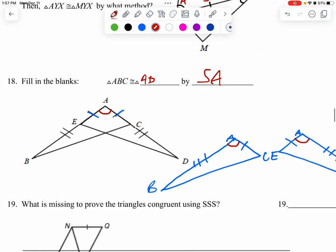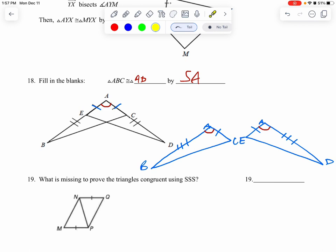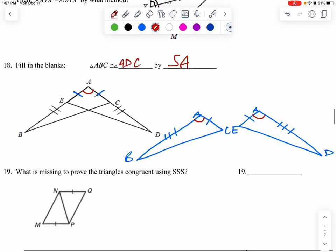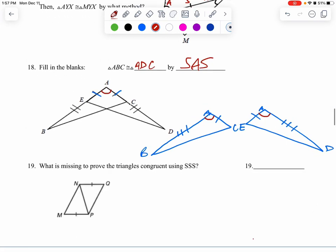And then what does C go with? Oh, they're right next to each other. Angle C goes with angle E. That doesn't look like a D, does it? A, D, C. Remember to match up the letters really carefully, and the reason that was is for SAS.